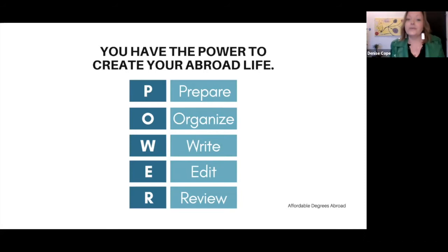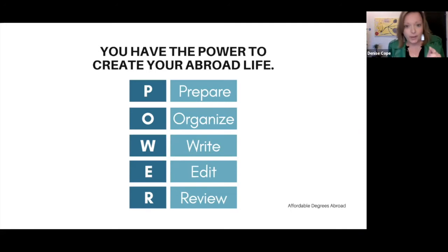We call it the POWER model and we'll walk through all the different steps. P is for Prepare, and O is for Organize — this is where you're going to spend most of your time. If you do this well, the next steps — Write and Edit — should go relatively fast. Review will also need a little more attention.